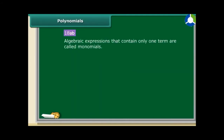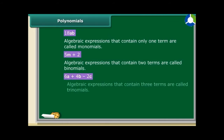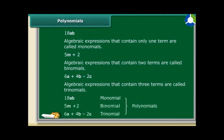An algebraic expression that has only one term is called a monomial. Is 5m plus 2 a monomial? No, it has two terms — this type is called a binomial. The expression 6a plus 4b minus 2c is not a binomial because it has three terms; so it is called a trinomial. Remember, all algebraic expressions that have one or more terms are called polynomials. Therefore, monomials, binomials, and trinomials are all polynomials.